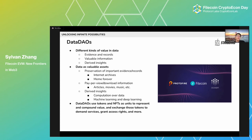There could be various forms of data DAOs holding data assets that generate different values. For evidence and records, you can have data DAOs that aim to preserve records for the internet, or maybe just making sure a meme lasts forever for centuries — that would be pretty cool. For the value in information, a pay-per-view or pay-per-download business model can work well for articles, movies, and music. Think of a DAO that hosts rights to some articles or movies with a pay-per-view mechanism — this DAO can run itself because it's generating value. For derived insights, users can pay to compute over data assets owned by a data DAO, which can be a very common use case for machine learning and deep learning.